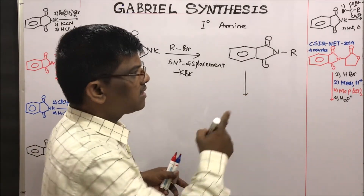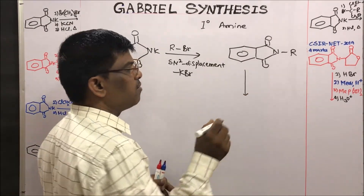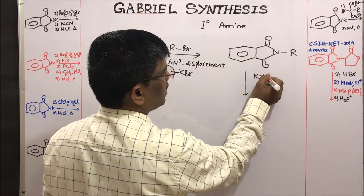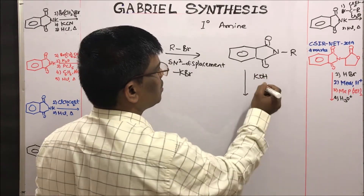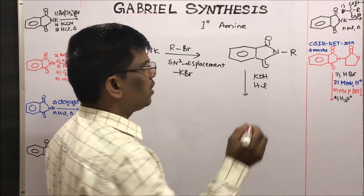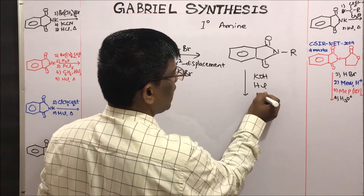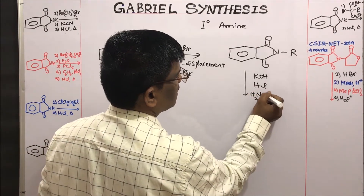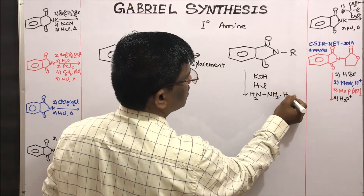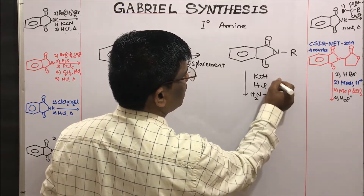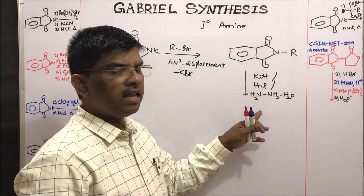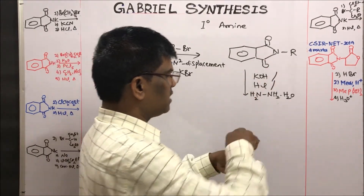This N-alkylated phthalimide, upon hydrolysis — this hydrolysis can be done using base (the usual method), or you can use acid, or you can use hydrazine hydrate. Yes students, you can use any one of these three and do the hydrolysis.